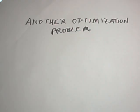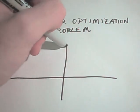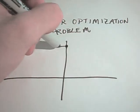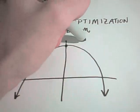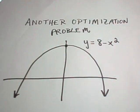It says, find the dimensions of the rectangle of the largest area that has its base on the x axis and its other two vertices above the x axis and lying on the parabola y equals 8 minus x squared. So here we're going to draw our parabola y equals 8 minus x squared. And that's a parabola facing upside down that gets shifted up 8 units.